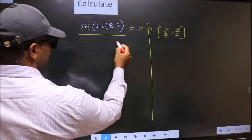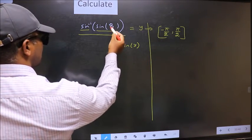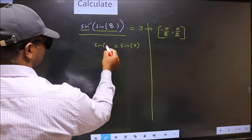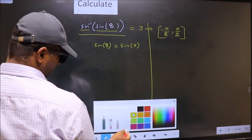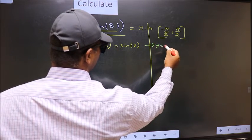Shift sin inverse to the other side. It will become sin y. And this no change. Now comparing both sides we get y to be 8.